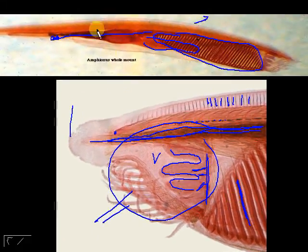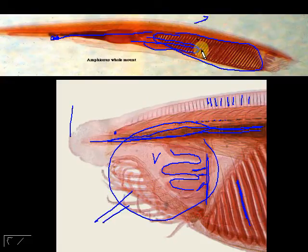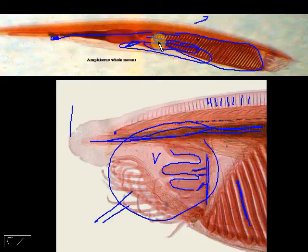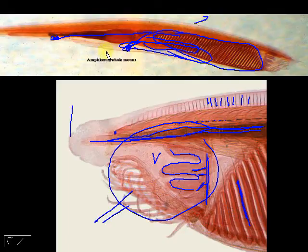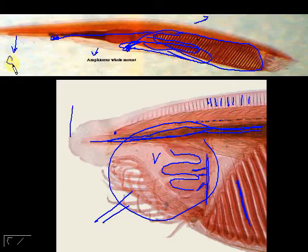For everything posterior to the oral hood, you have the intestine and the gonad. The pharynx is contained in an atrium, so there is an atriopore. After the atriopore you have the ventral fin, and at the very end you have the caudal fin.